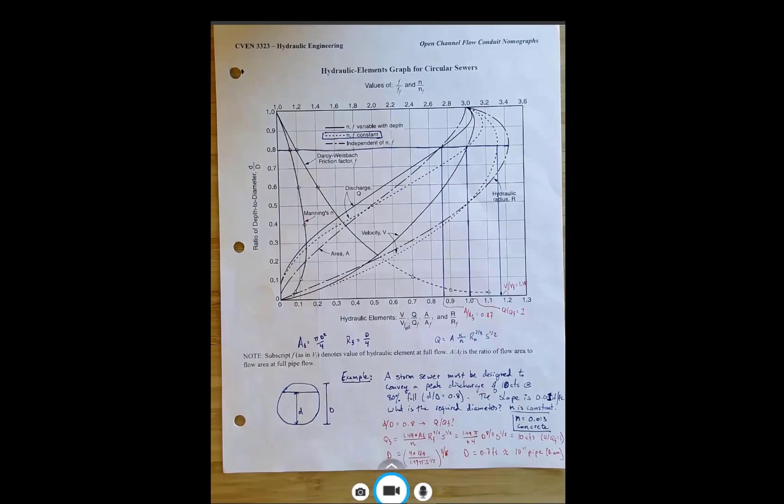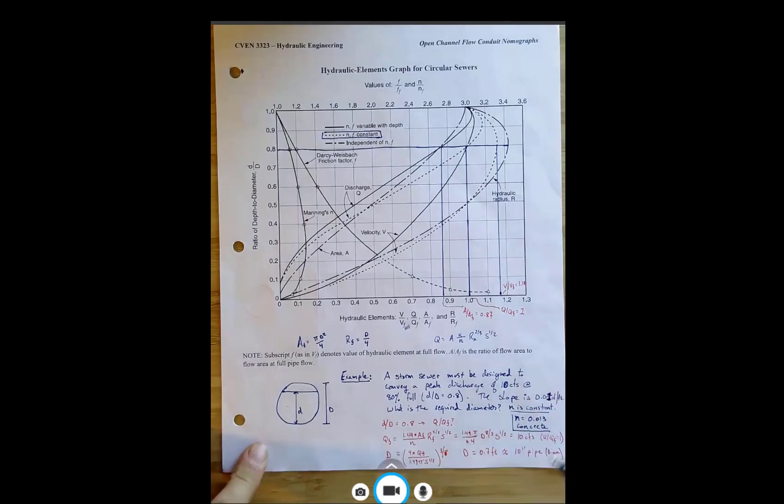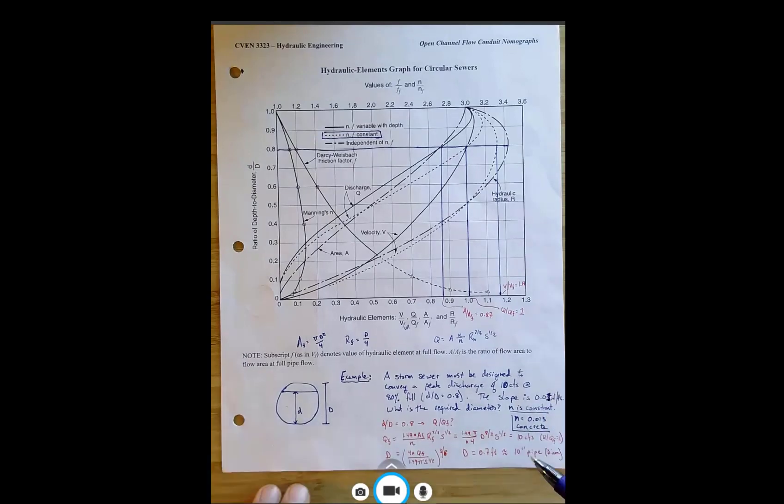Okay. So that's another reason why we design pipes to be carry the peak discharge at 0.8 depth. Okay. So q over qf is equal to one. That's good to know. Let's just go and solve the Manning's equation for qf.